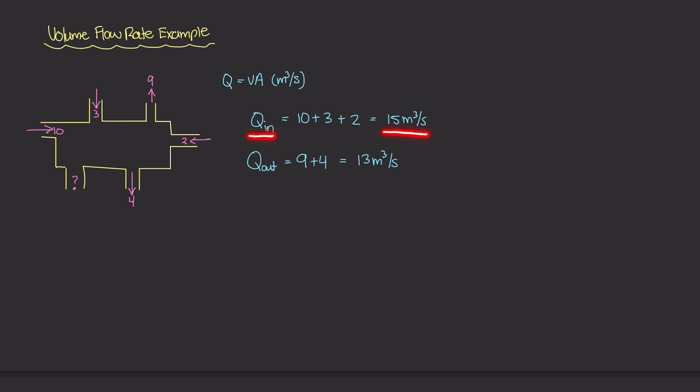Looking at Q in — that is 15 meters cubed per second coming into the system — but so far only 13 is leaving. Since these flow rates have to equal one another, there's a difference of 2 meters cubed per second. Which direction is that 2 meters cubed per second going? It can't be going in, because then Q in would become 17. But if it's leaving the system alongside the 9 and the 4, then 15 meters cubed going in means 15 must also be coming out. So the question mark is 2 meters cubed per second, and it's leaving the system.